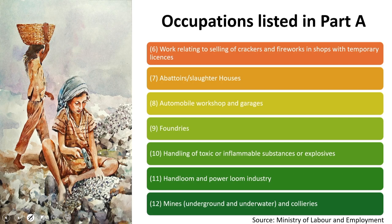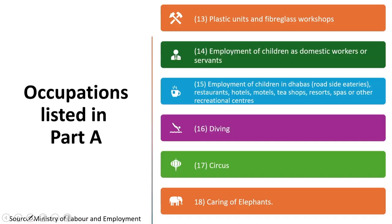Other important occupations in Part A include abattoirs, also called slaughterhouses; automobile workshops and garages, where exploitation heavily happens; foundries; and handling of toxic, inflammable substances or explosives. Throughout this listing, there is an inherent concern for exploitative and hazardous working conditions. Further occupations include handloom and power loom industry, where child labour is heavily seen; mines, specifically dangerous underground, underwater and collieries; plastic units and fiberglass workshops; and employment of children as domestic workers or servants.